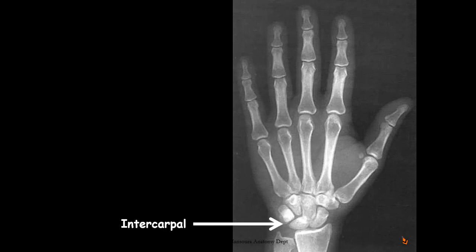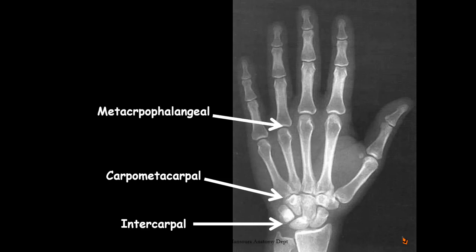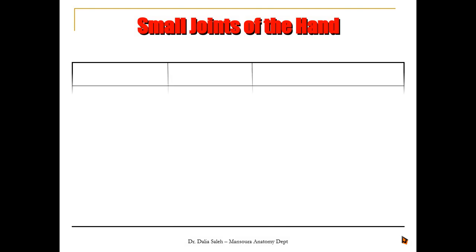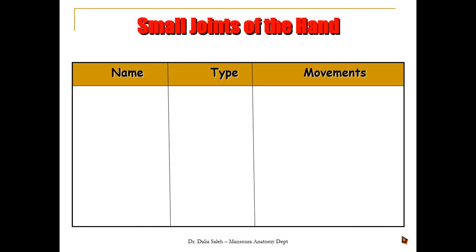In this X-ray, we can see the intercarpal joints between the surfaces of the carpal bones, the carpometacarpal joints between the bases of the metacarpal bones and the carpal bones, the metacarpophalangeal joints, and the interphalangeal joints — both proximal and distal. To summarize the small joints of the hand, we need to know the name of each joint, its type, and the movements produced.